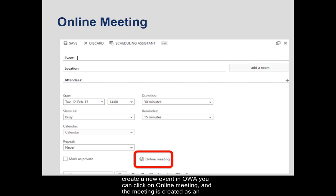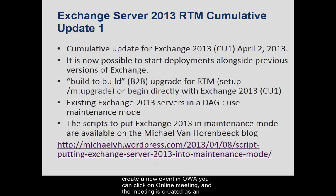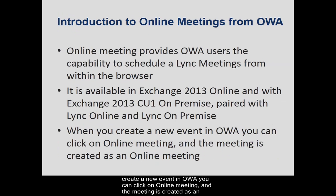When you create a new event in OWA, you can click on Online Meeting, and the meeting is created as an online meeting. You can also update an existing event to be an online meeting.